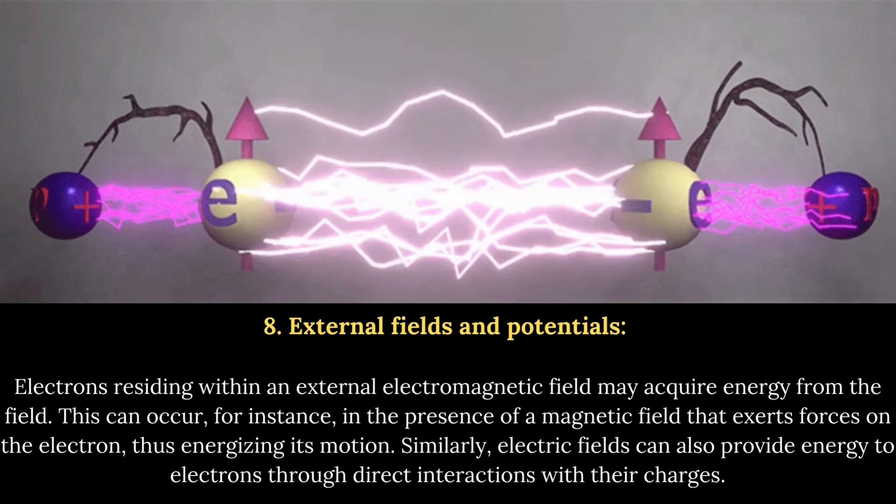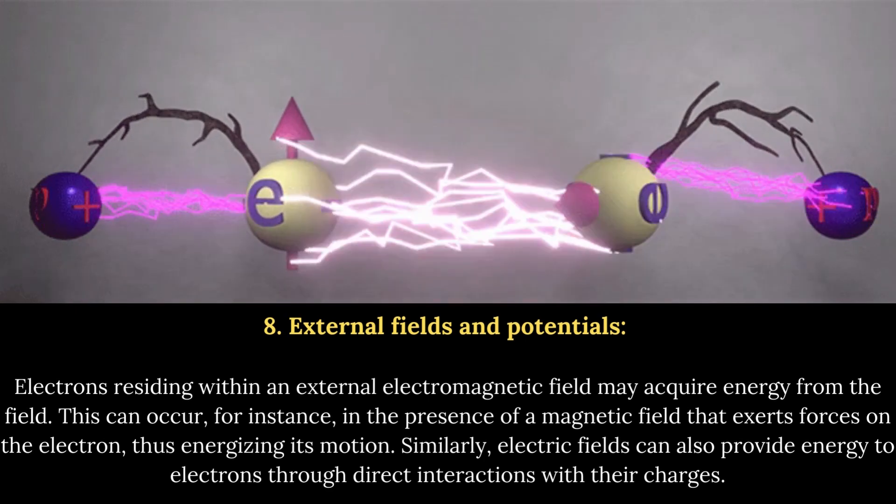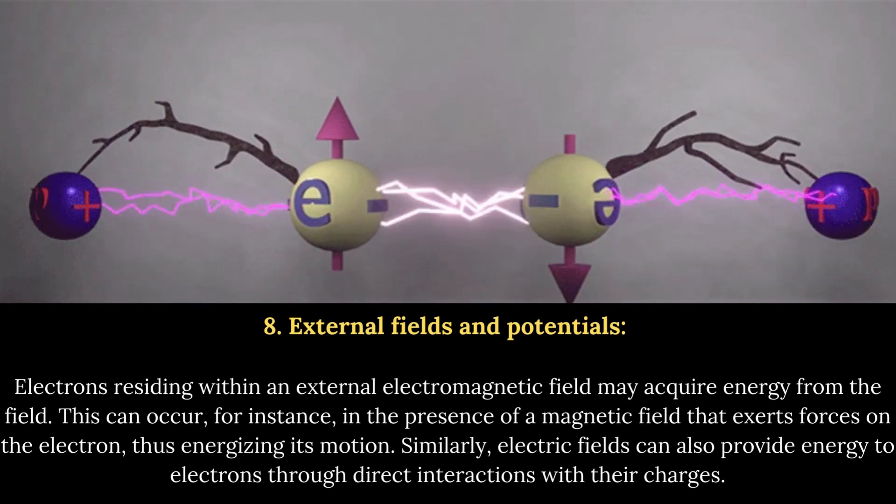8. External fields and potentials. Electrons residing within an external electromagnetic field may acquire energy from the field.